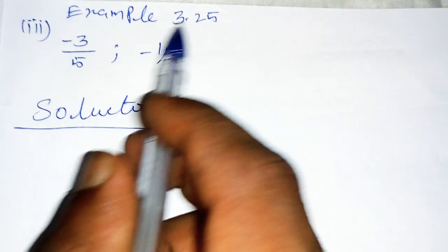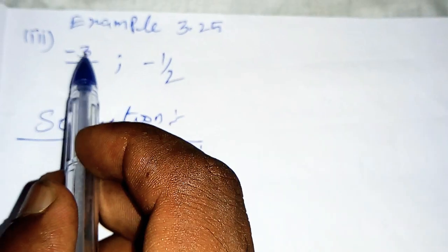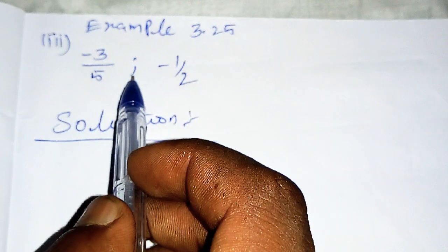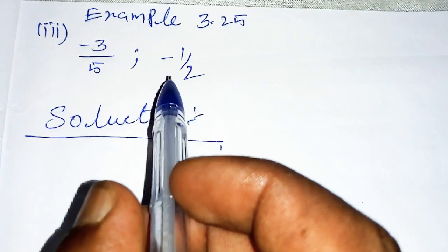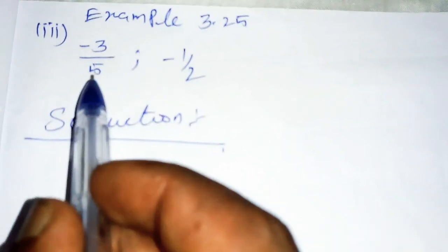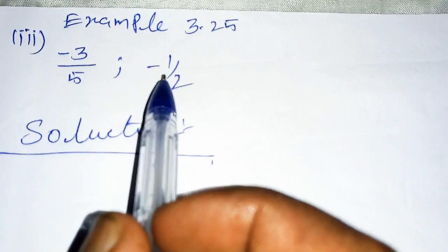Example 3.25, part (iii): -3/5 and -1/2. The question is to find the quadratic equation given the roots. Roots means sum of the roots and product of the roots.